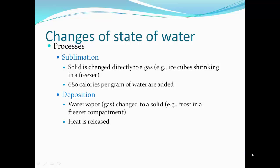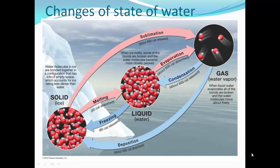Sublimation is when a solid changes directly to a gas — for example, ice cubes shrinking in the freezer — taking 680 calories per gram of water added. Deposition is when water vapor changes to a solid, like the frost in the freezer compartment of the refrigerator. Heat is released.